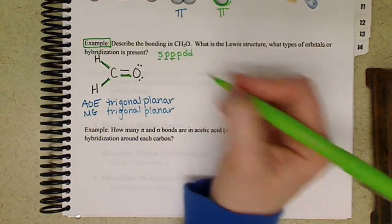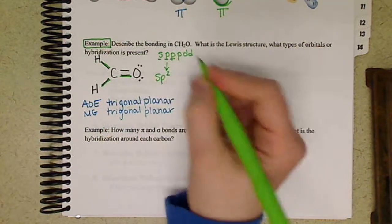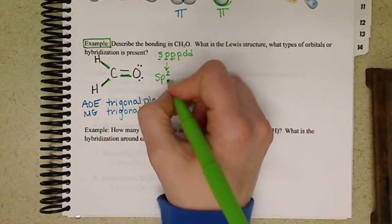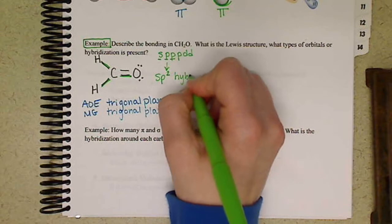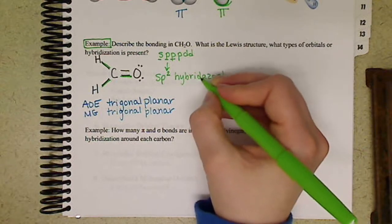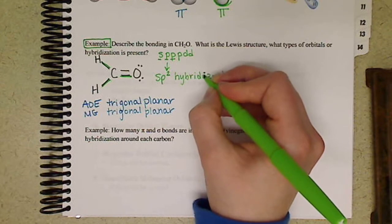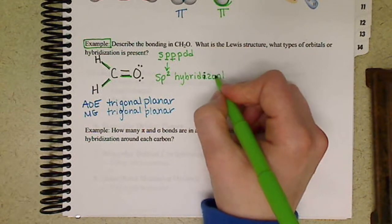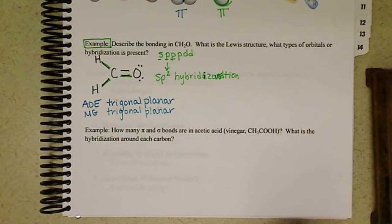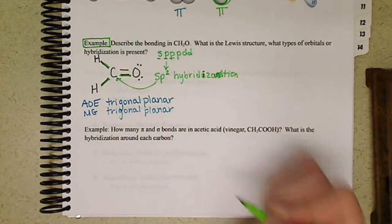So we underline our first three, we would hybridize those to have sp2, because we underlined two p orbitals. So we have sp2 hybridization. Hybridization. That was ugly. So there is sp2 hybridization on carbon.